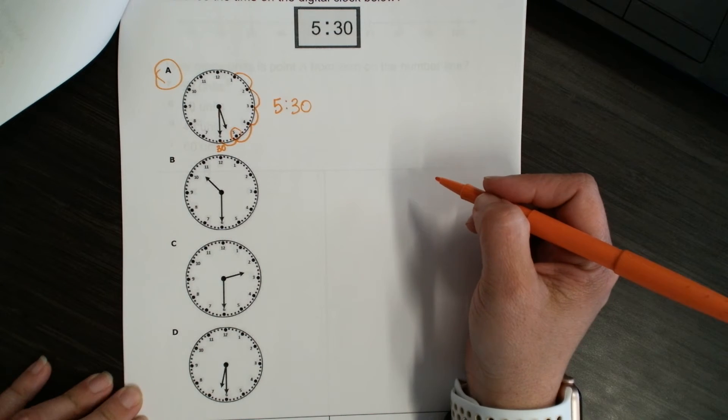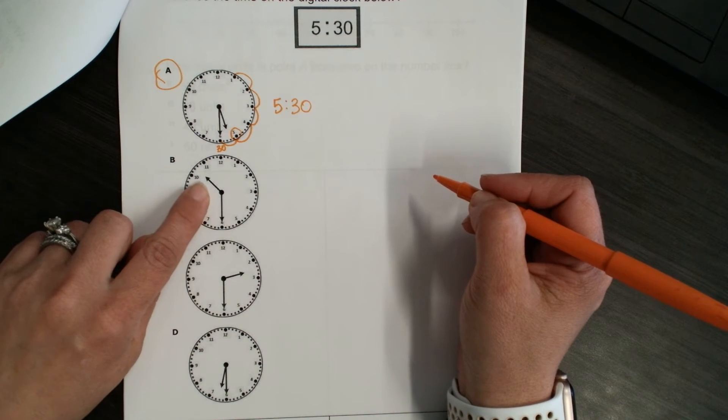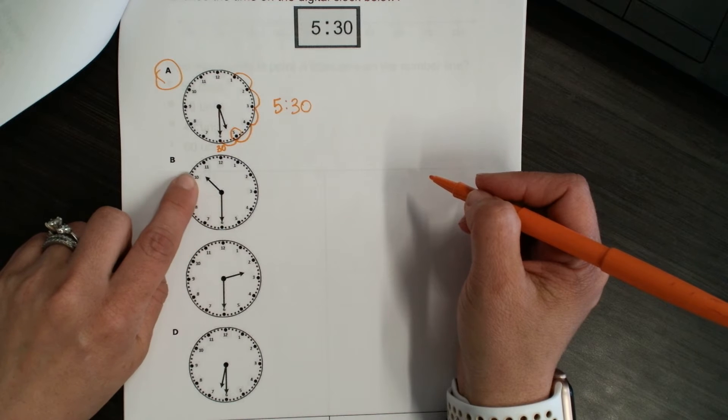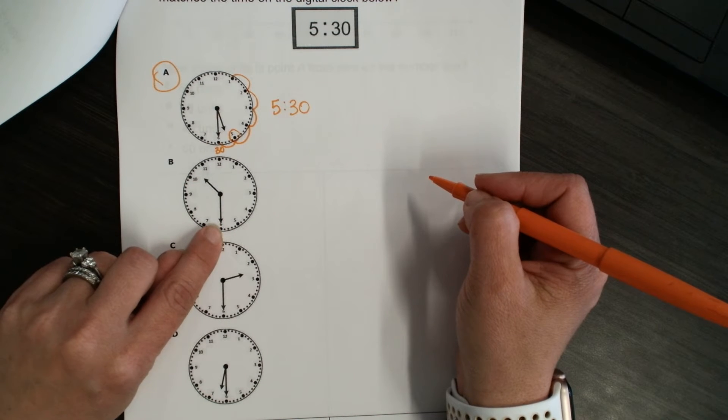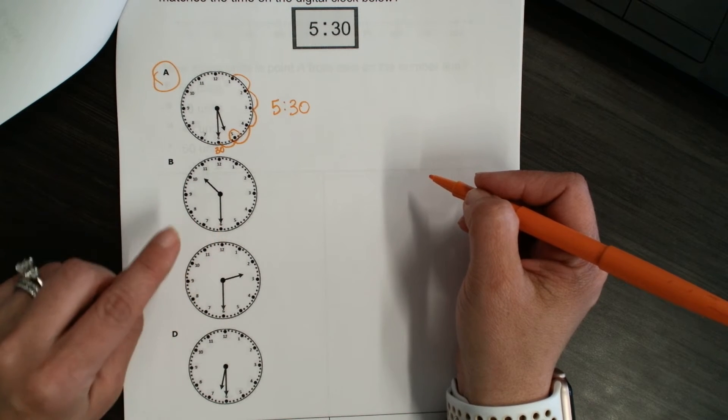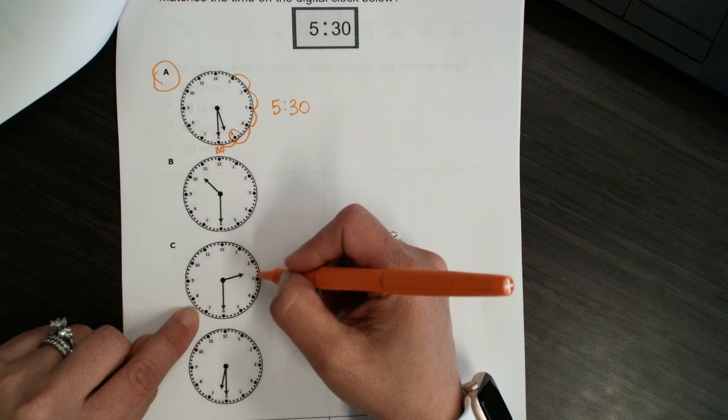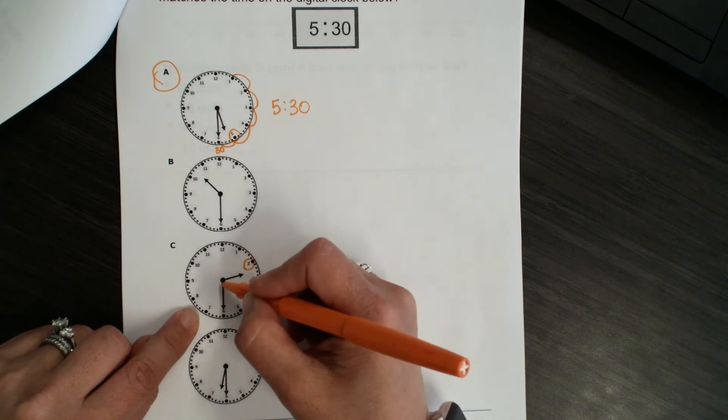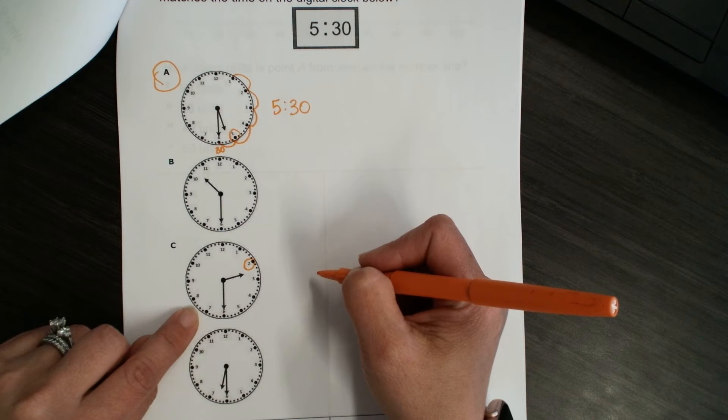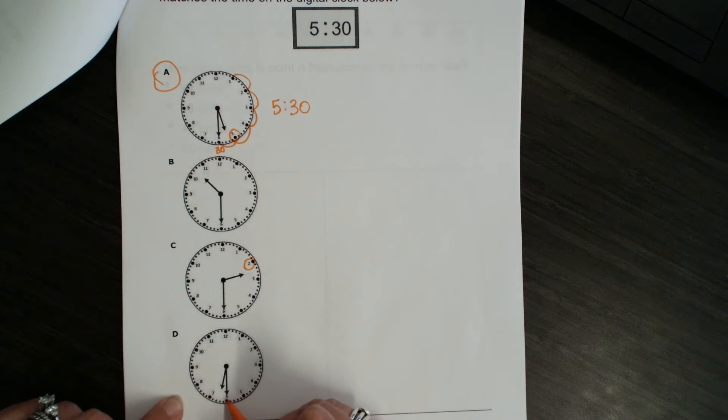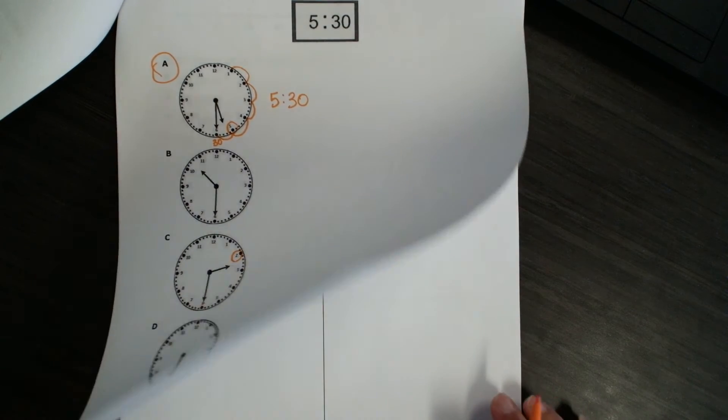But, let's look at these others. This clock is in between the 10 and 11. So, that one shows 10:30. The minute hand is on the 6. This one's between the 2 and the 3. So, we say 2. Minute hand is on the 6. That's 2:30. And our last one is between 6 and 7, the hour hand. So, we say 6:30. Okay. So, A was our choice there.